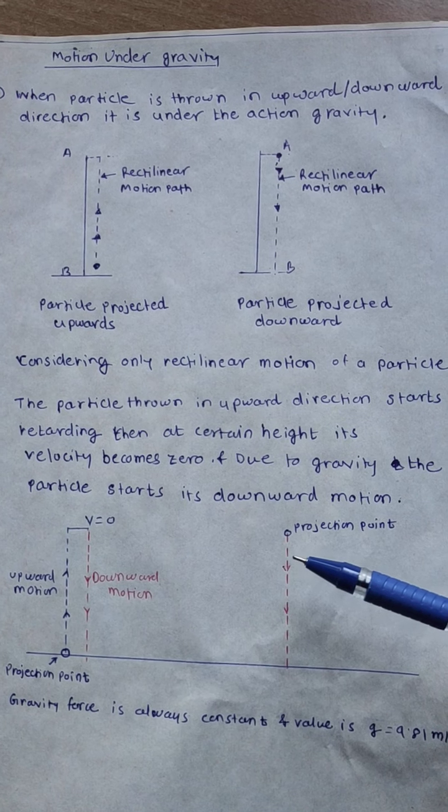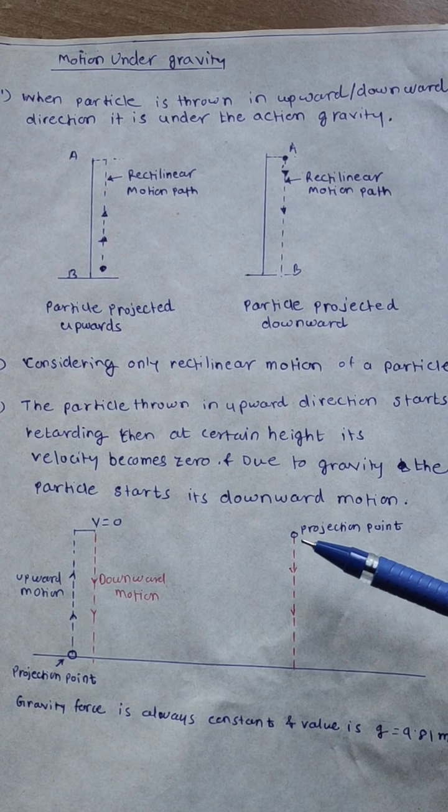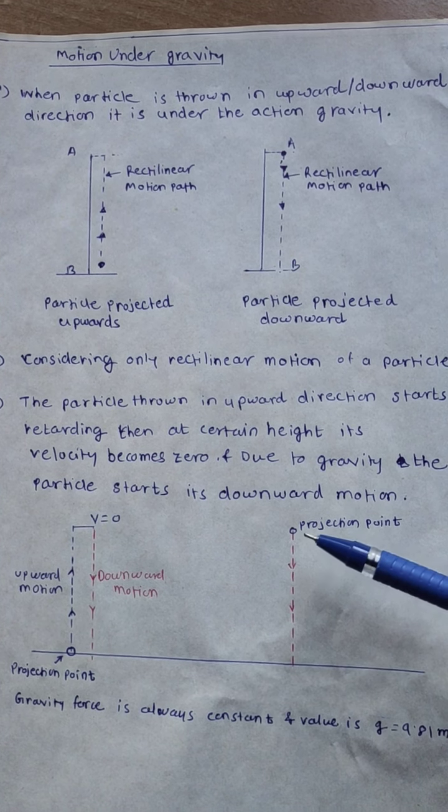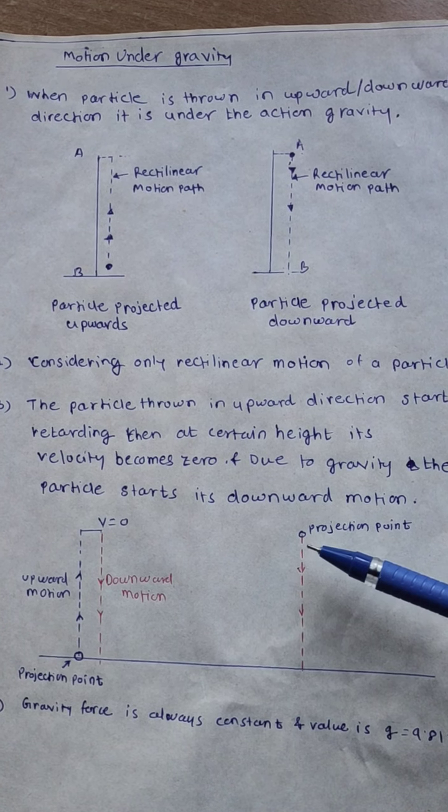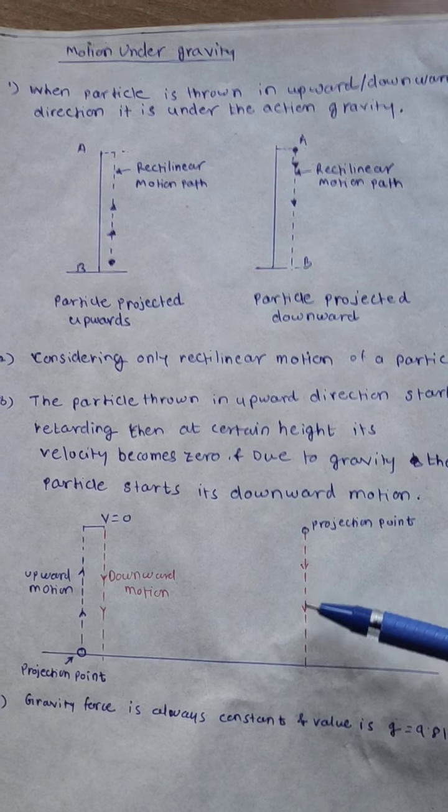here we can see the projection point of a particle. So if it is thrown from this point, then also it is coming in downward direction.